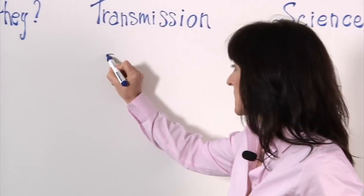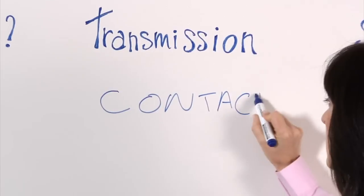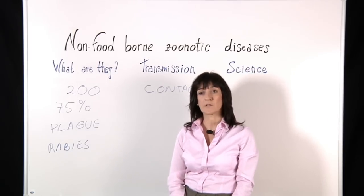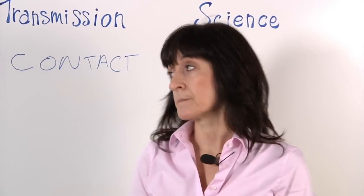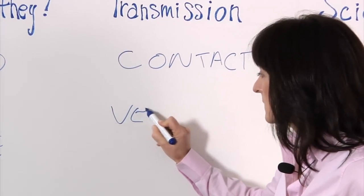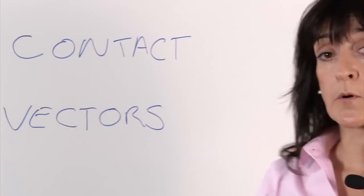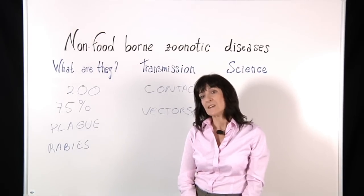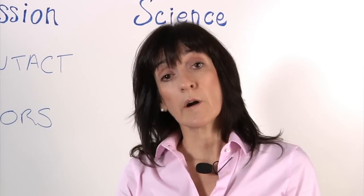So how are these diseases transmitted? Well, they can be transmitted by direct contact — for example, avian flu. We think most of the human cases originated from contact with live or dead infected poultry. They can also be transmitted through vectors — for example, Lyme disease, transmitted by the bite of infected ticks that transmit the disease between various hosts such as deer, other animals, and humans.